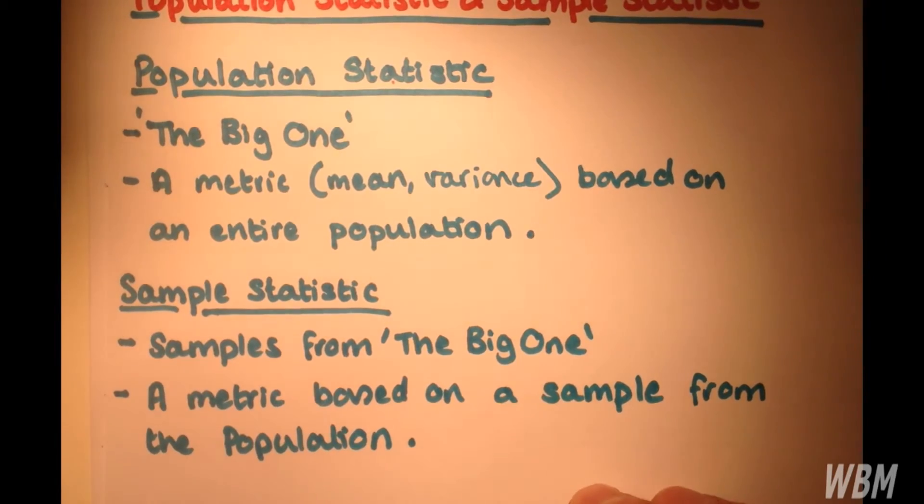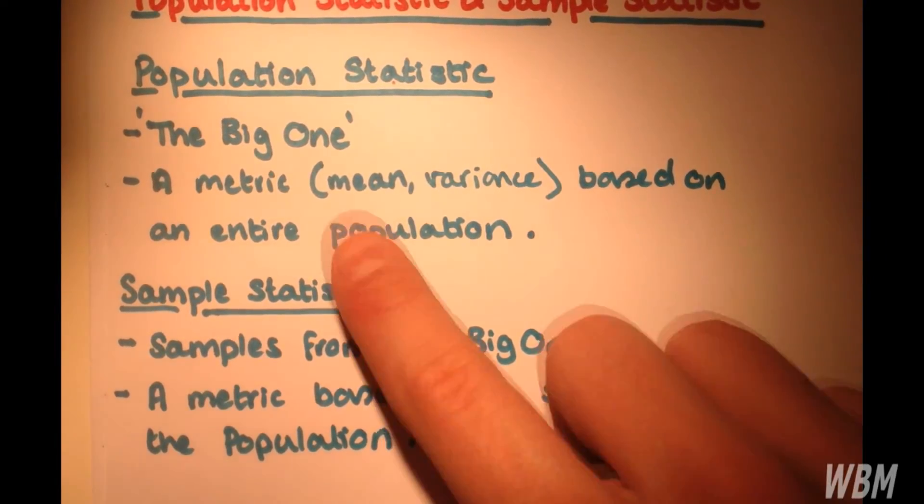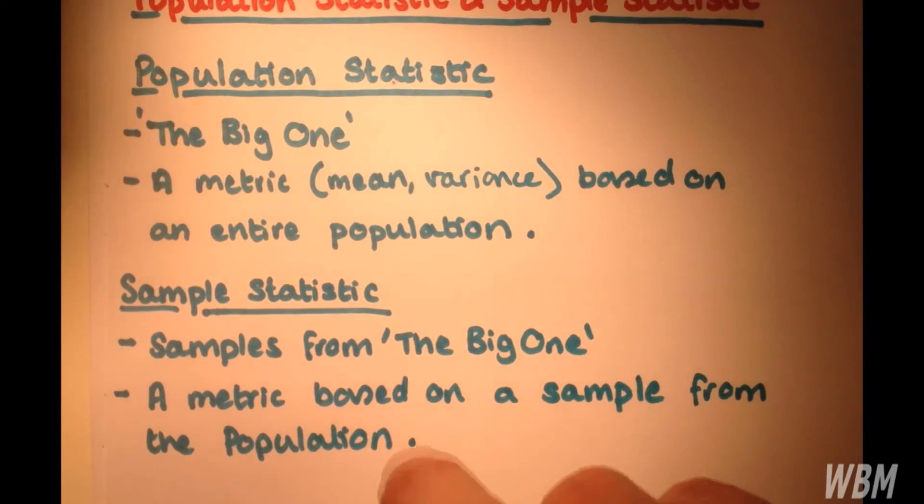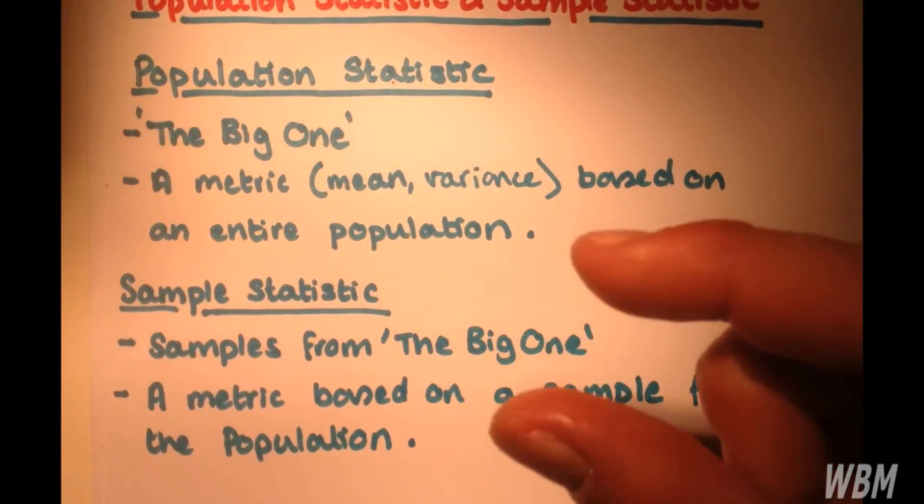So an example of this would be if the population is a study on football goals in the decade of the 2000s, then a sample could be the goals scored in the February of any of those years. So the sample has to be uniform in its method, but it can be quite short.